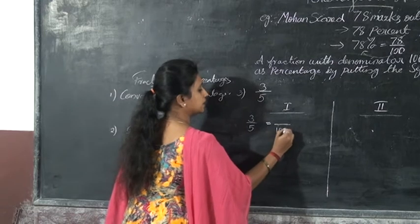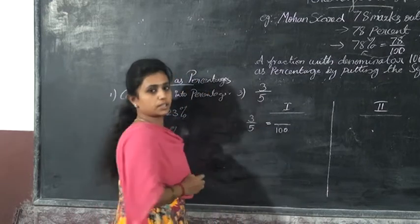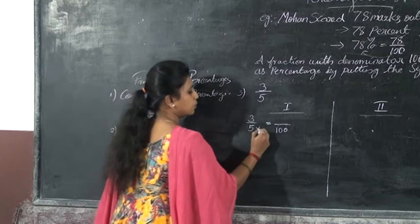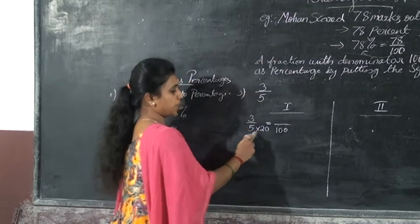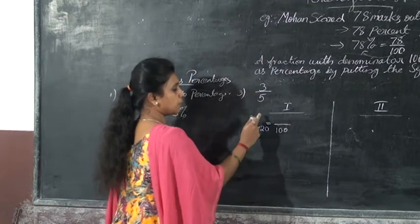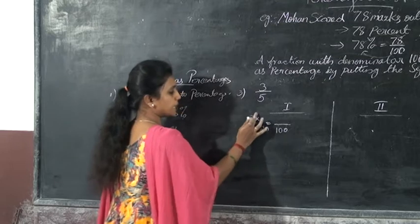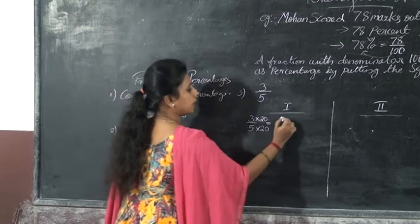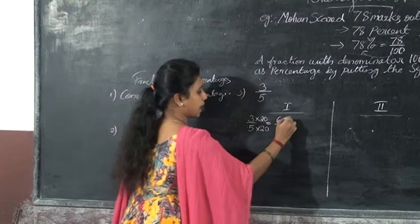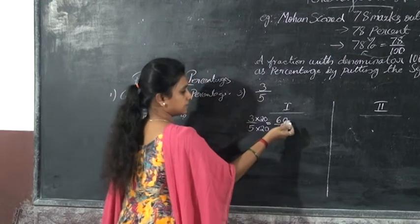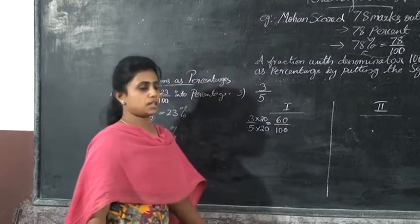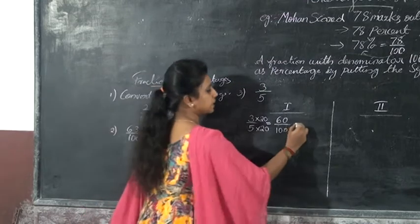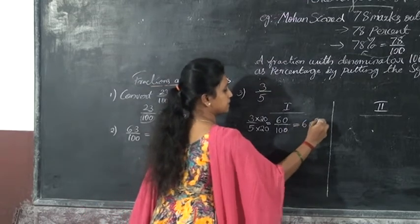One hundred is our target denominator. What number multiplies 5 to give 100? 5 into 20 gives 100. So you multiply both the numerator and denominator by 20. That gives us 60 by 100, which is 60 percent.